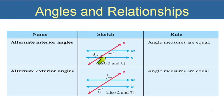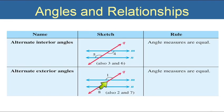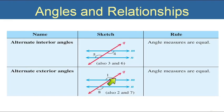We can also get alternate exterior angles — exterior meaning they're not between the parallel lines but outside. For example, angle 1 and angle 8 are alternate exterior angles, so they are equal. We could also have angle 2 and angle 7, which would also be alternate exterior. Alternate exterior angles are always equal.